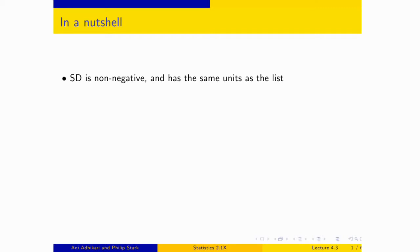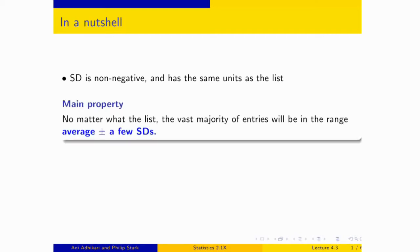It's what we said some time ago, which is that the main property of the SD is you stand at the average and you walk a few SDs on either side. Over that interval you will pick up a chunk of the histogram. And the SD is such a number that if you walk two, three, four SDs on either side of the average, you will pick up the vast majority of the data.